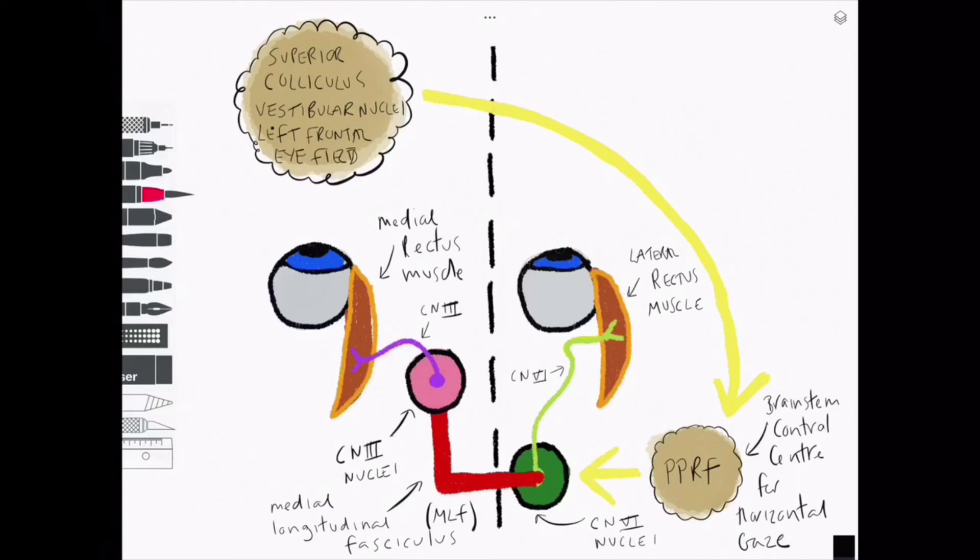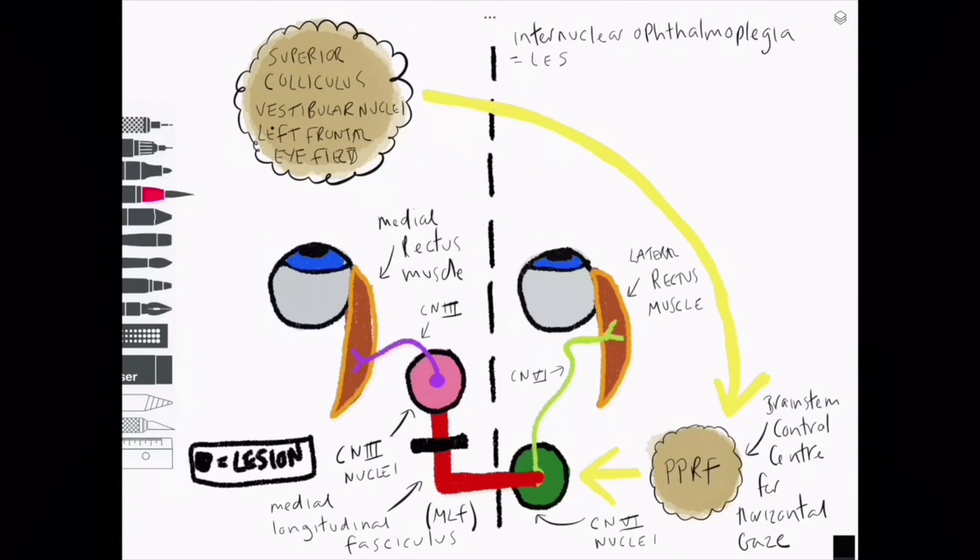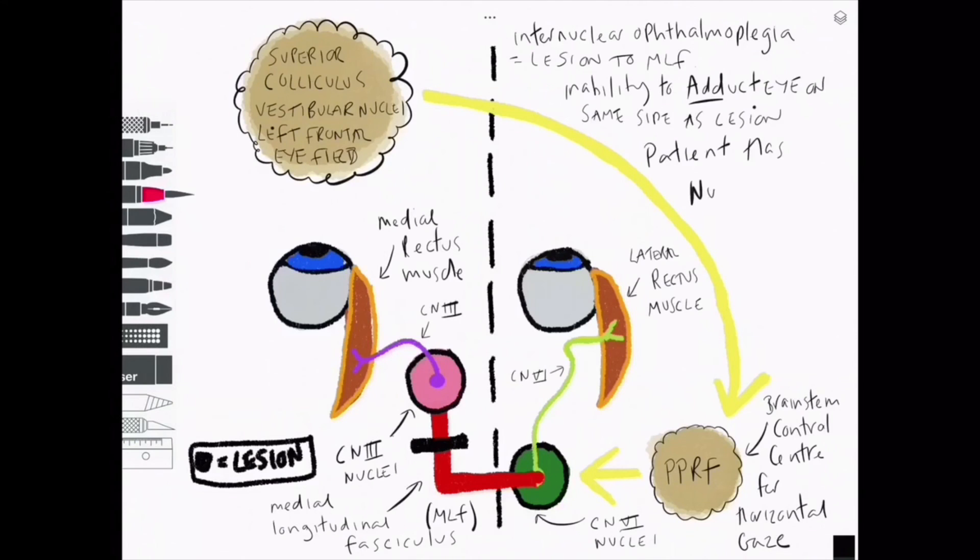Damage to the MLF causes a very characteristic set of symptoms that we group together and call internuclear ophthalmoplegia. When this happens, the eyes move independently on lateral gaze, as there is no longer a connection between nerves 3 and 6.